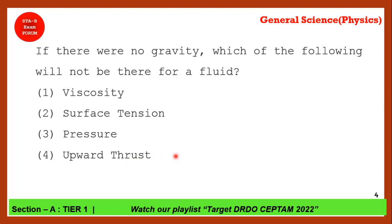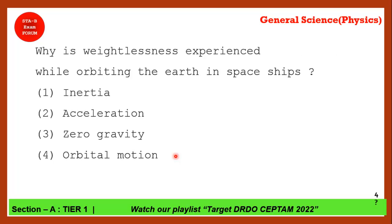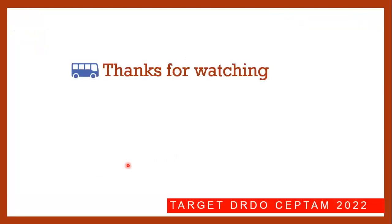Why is weightlessness experienced while orbiting the earth in a spaceship? It's not zero gravity — it is because of the orbital motion that they are experiencing weightlessness. Just remember: it's because of orbital motion, not because of zero gravity.